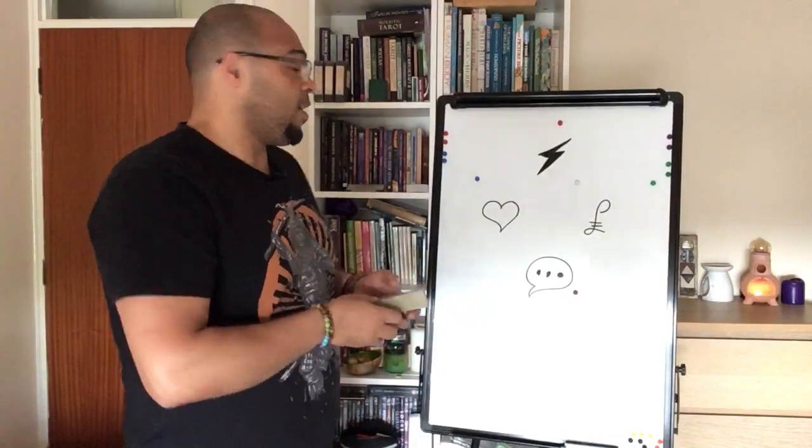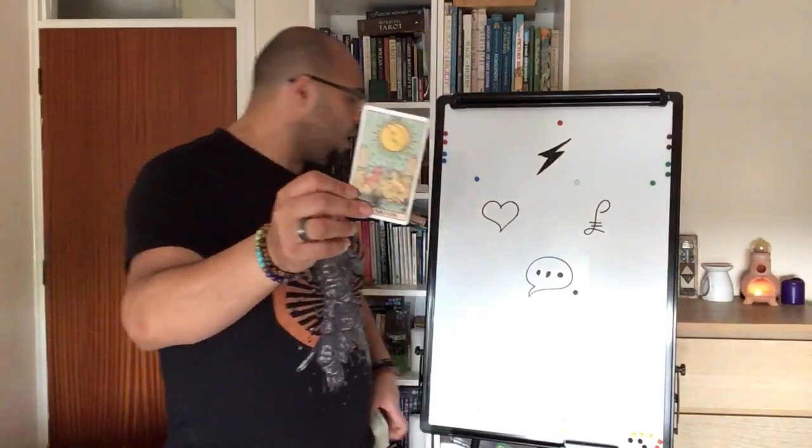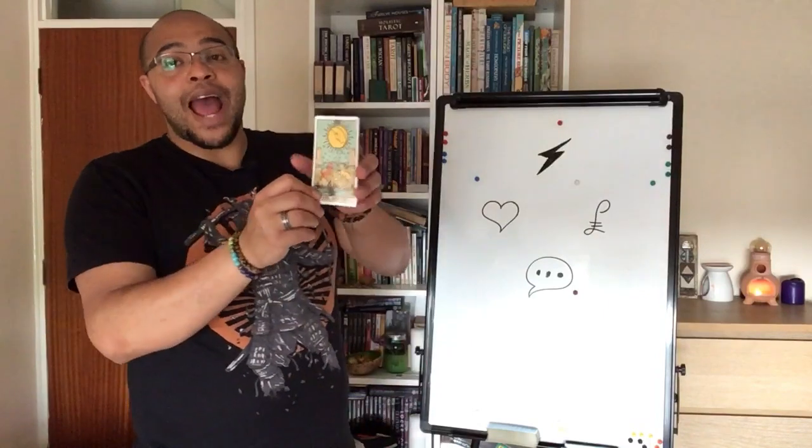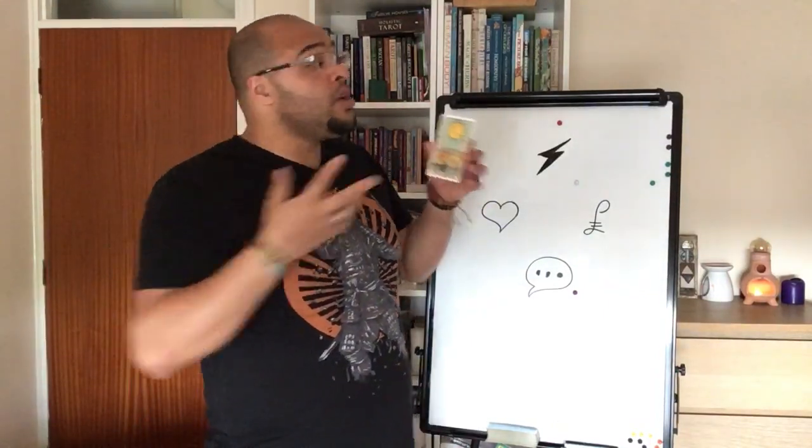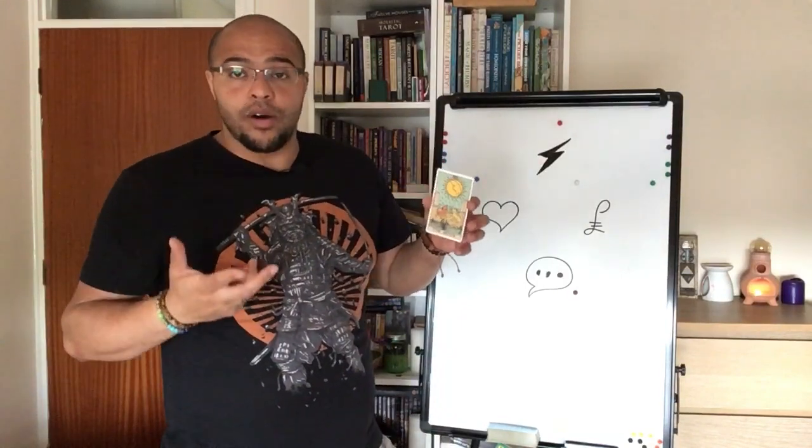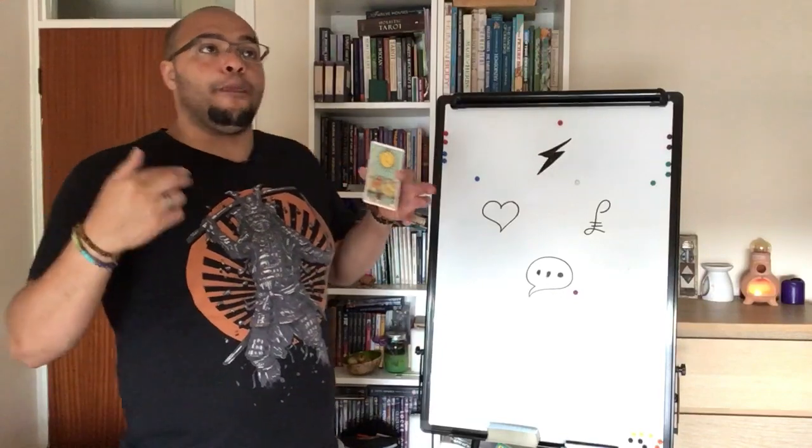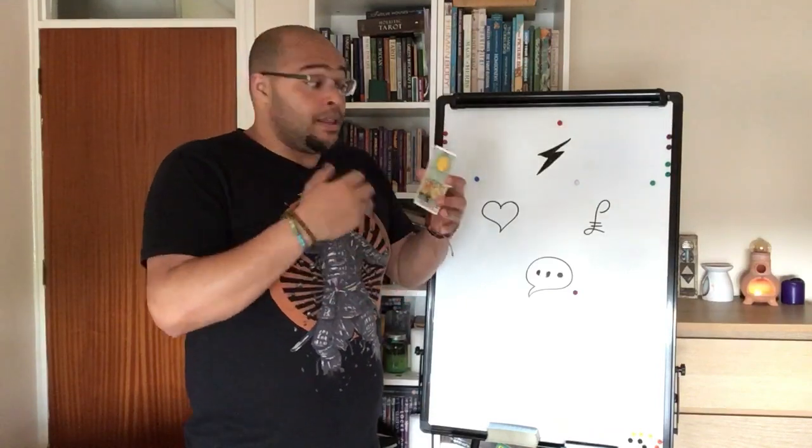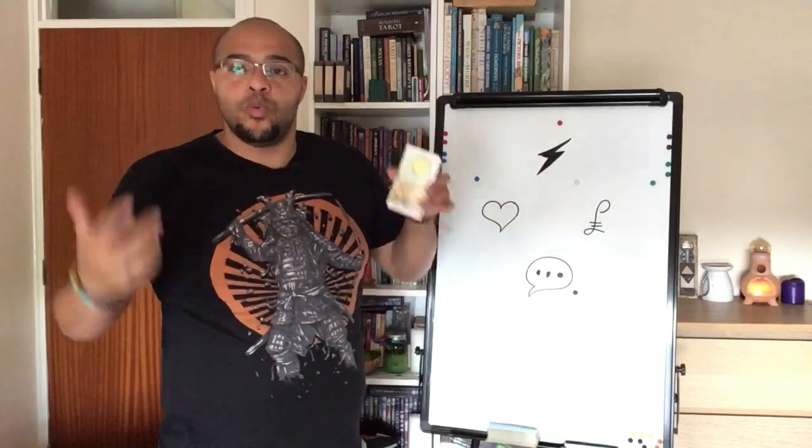So your actions and your interactions with the world at large this month. You've got the Moon card. So the Moon is your ruler to start with, but it actually represents the sign of Pisces in tarot. So when you get the Moon card, this is about musing over the past. This is about looking into the past. It's about asking yourself about your instincts.